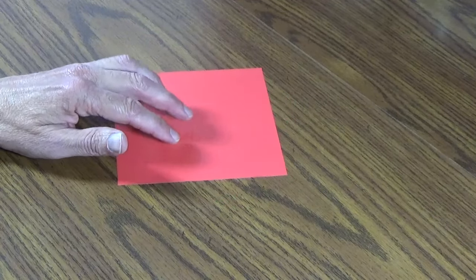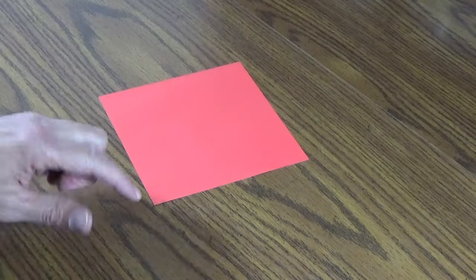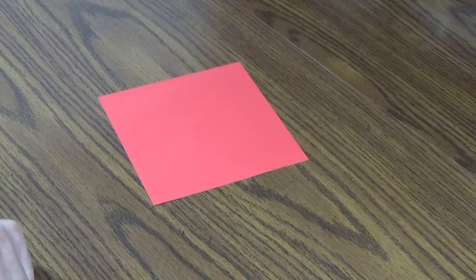What we're going to do today is make a kite, and I'm using a piece of paper that's square. It is five and seven-eighths on each side, but you can use any size of paper as long as you make it a square for this project.